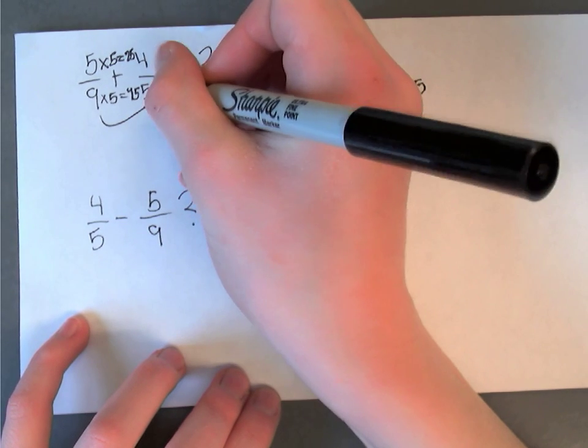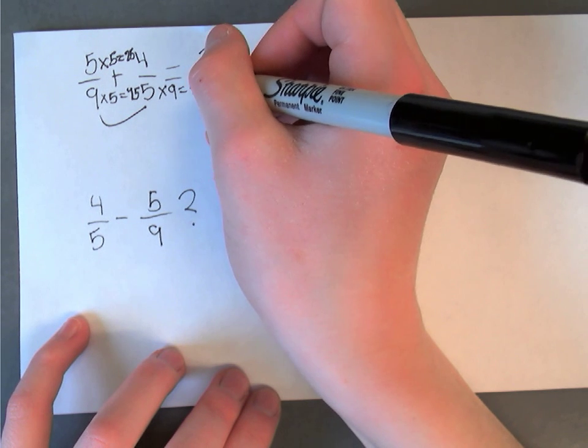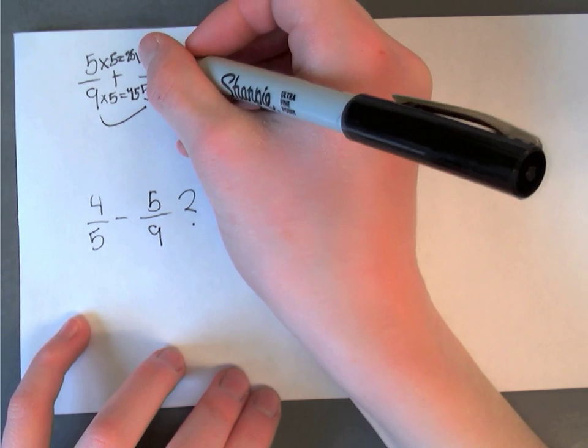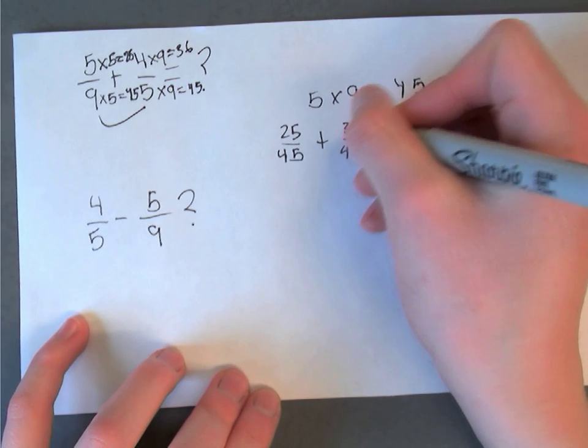25 over 45. And then here we did times nine for the bottom. So that equals 45 and times nine equals 36.